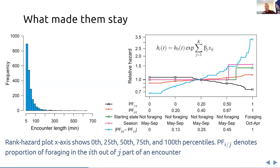Relative hazard above 1 means that there is a risk of ending an encounter. So everything with relative hazard above 1 corresponds to shorter encounters, and everything with the relative hazard below 1 corresponds to longer encounters.